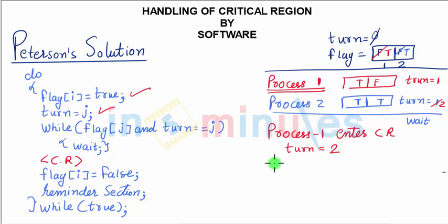Process 1 enters the critical region, performs its necessary task, and then makes its own flag false. The remainder section will enable Process 2 to enter.